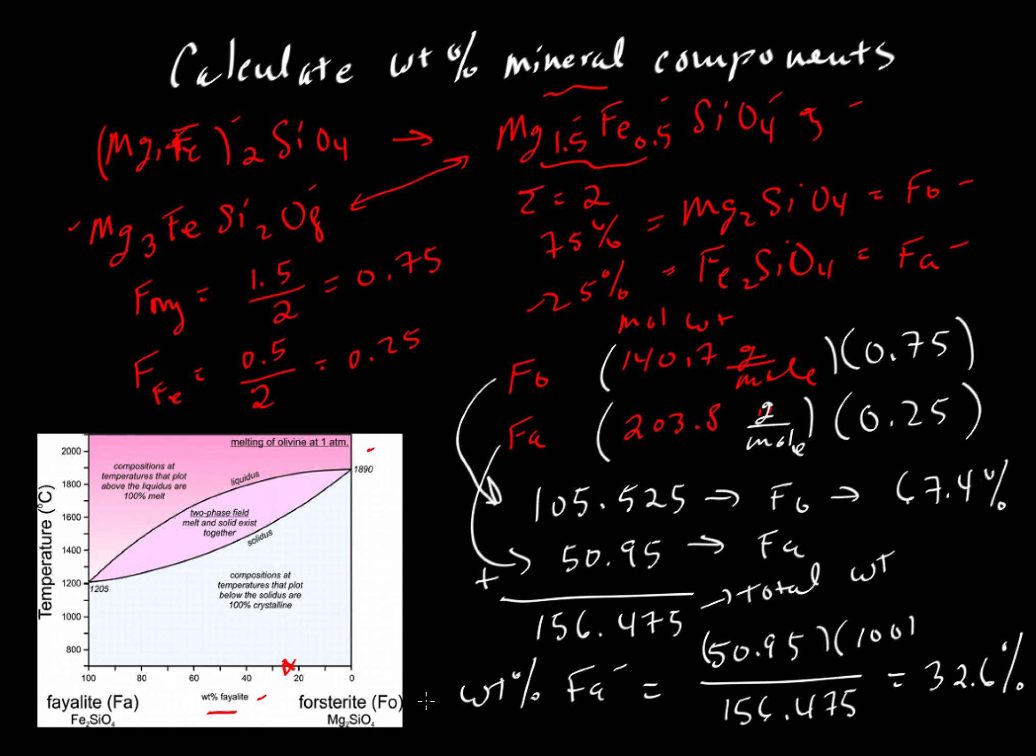We only need the weight percent fayalite to plot on this scale. That weight percent, 32.6, would plot about here. You can see it is displaced by maybe a small amount from the incorrect placement at 25%, but it will make a big difference in terms of the temperature.